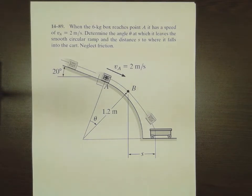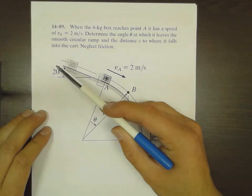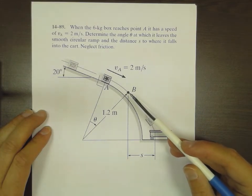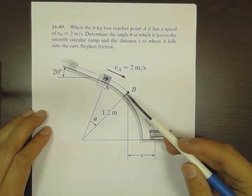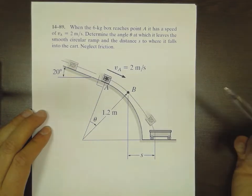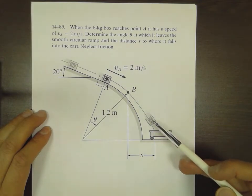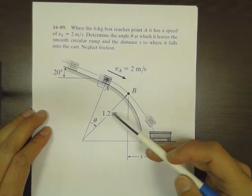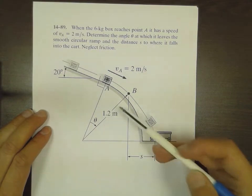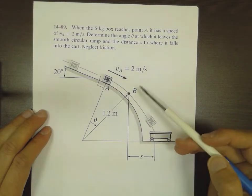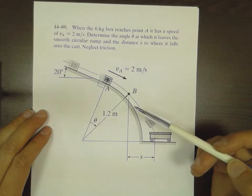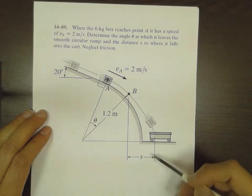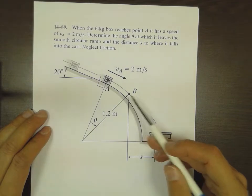We're going to deal with a case of a box moving down a ramp in a rectilinear fashion, then moving in a curvilinear way and flying off the ramp at point B. Finally, it moves in a projectile-like fashion before falling down onto the cart. What is required is to calculate the angle theta at which the box leaves the ramp, and also the horizontal distance S from the point of departure to the location of the cart.